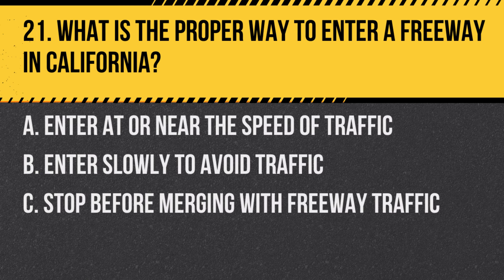Question 21: What is the proper way to enter a freeway in California? A. Enter at or near the speed of traffic. B. Enter slowly to avoid traffic. C. Stop before merging with freeway traffic. Answer: A. Enter at or near the speed of traffic. When entering a freeway, you should match the speed of traffic and merge safely.